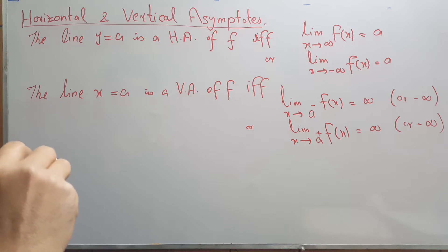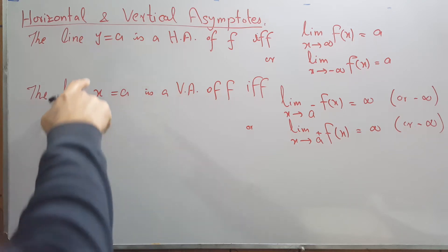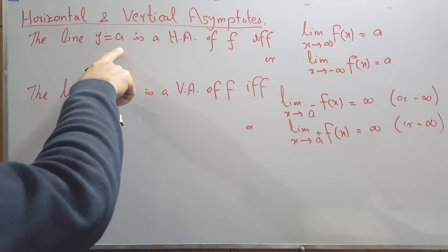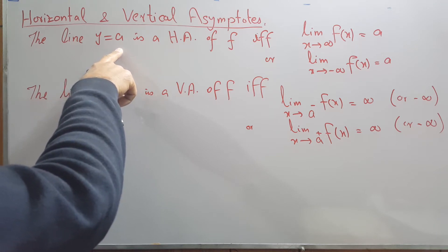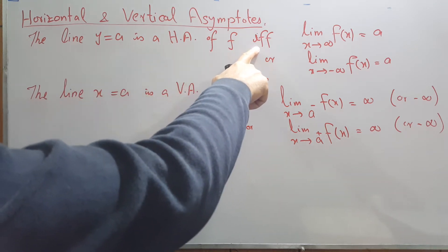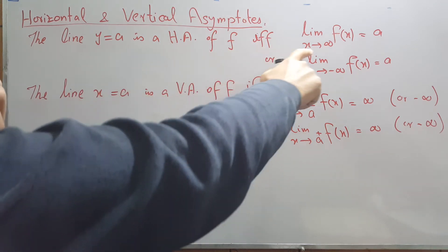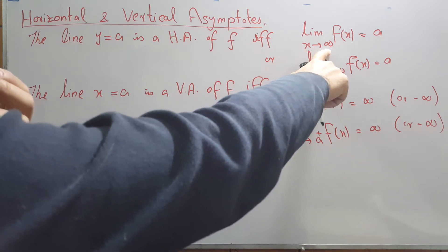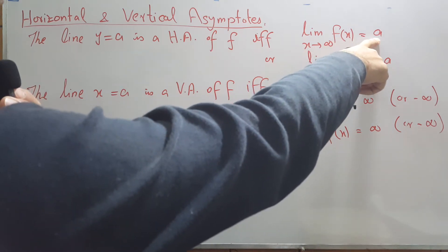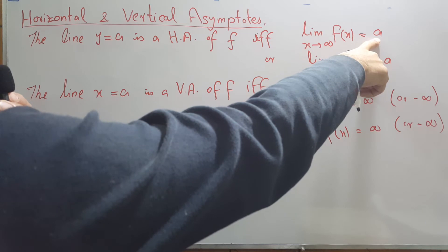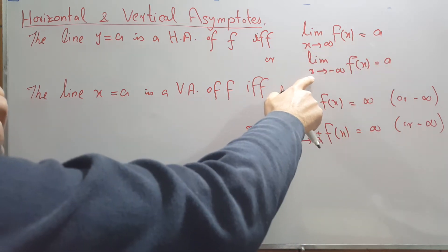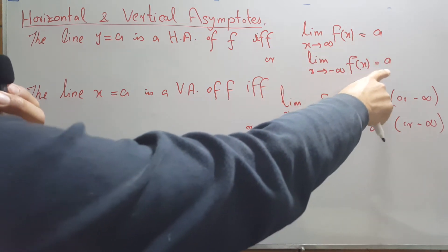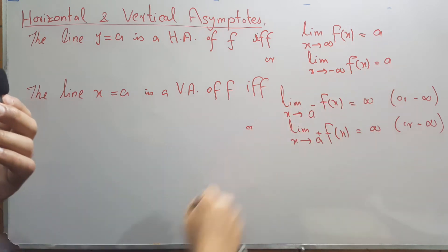What is a horizontal asymptote? The line y equals a is called a horizontal asymptote if and only if the limit as x approaches positive infinity of f(x) equals a, or if the limit as x approaches negative infinity of f(x) equals a.